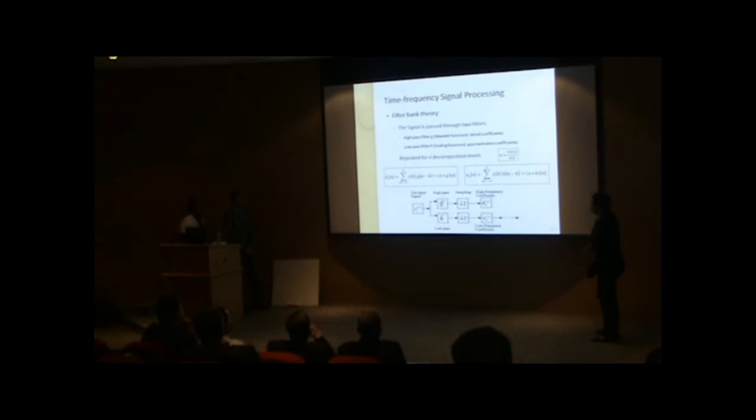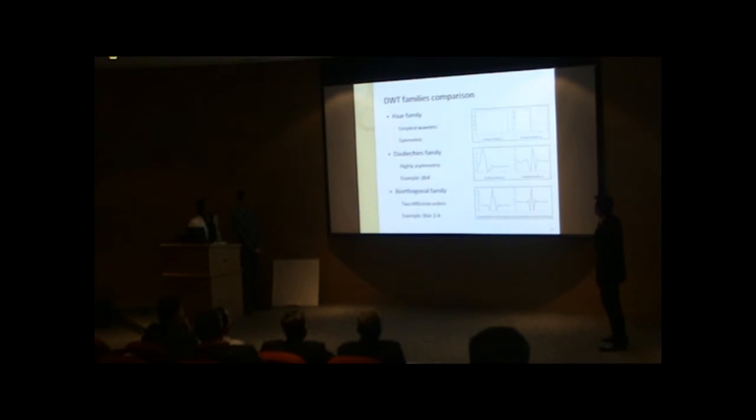We explain the filter bank theory. This is what the discrete wavelet transform does. It basically passes your signal through low-pass and high-pass filters in order to get the approximation and coefficients. When you're passing through high-pass filter, you get high-frequency coefficients, which are the detailed coefficients. And we use low-pass filter in getting the approximation. The approximations are further decomposed into as many levels as you can have, which is limited by this equation. So it depends on the number of samples you have.